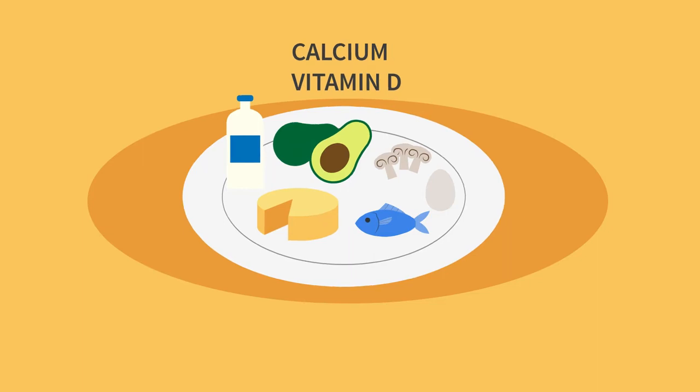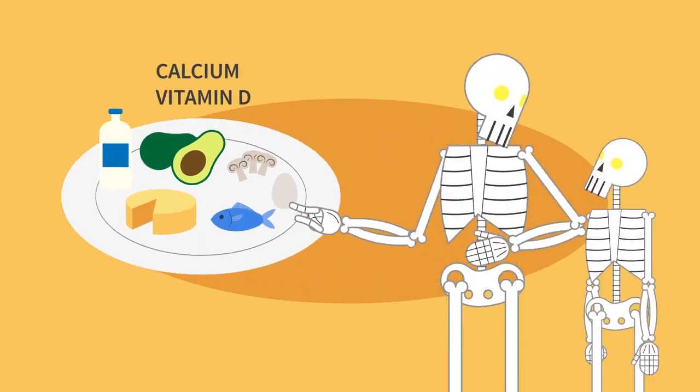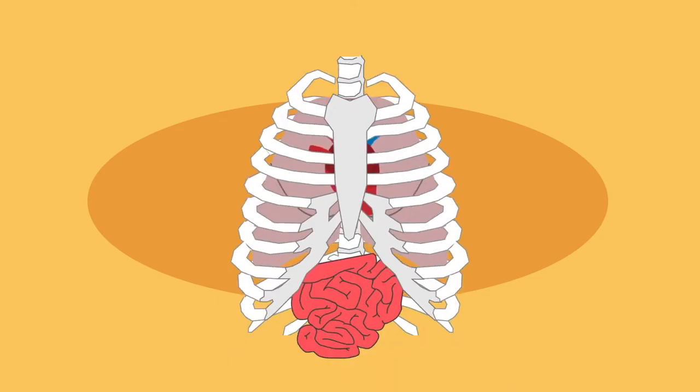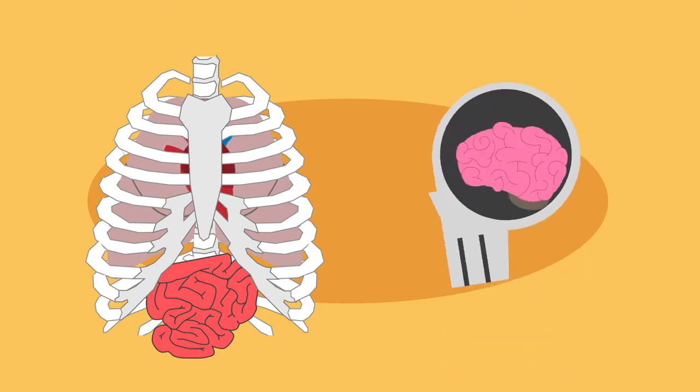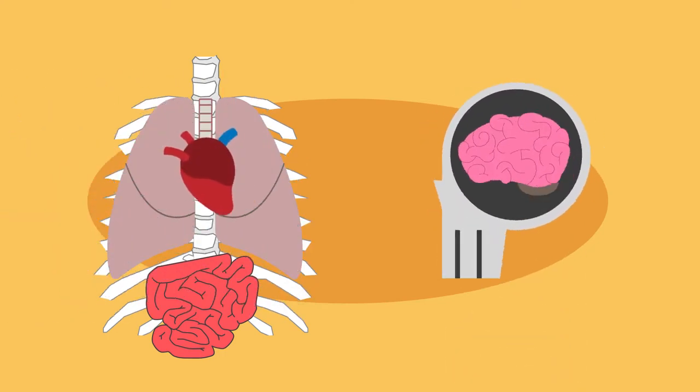The skeleton has a few major functions. One is protection of vital organs: cranium to protect your soft squidgy brain, ribs for lungs and heart. The other is to attach muscles to in order to move the body.